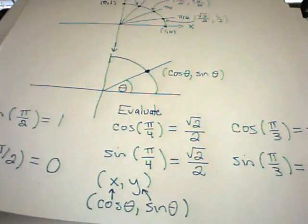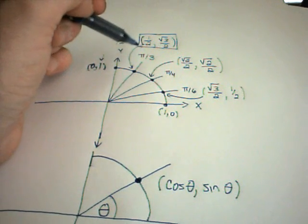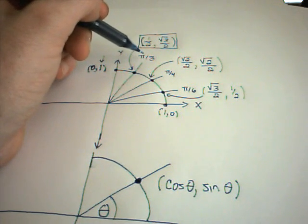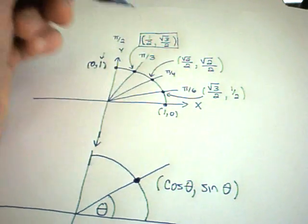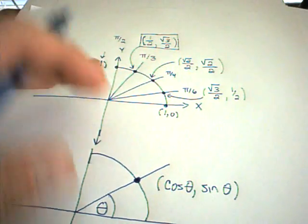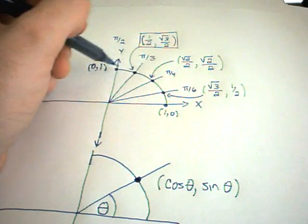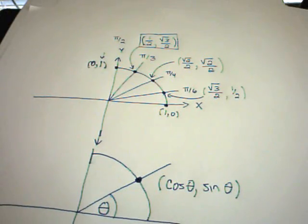Let's talk about evaluating sine and cosine at some different values. Almost always you can put these in a calculator. If your teacher expects you to evaluate sine and cosine — or the other trig functions, which I'll talk about in another video — without a calculator, they're going to always use multiples of π over 3, π over 4, π over 6, or π over 2. I only have a handful of values memorized, but even so you can do quite a bit with them.